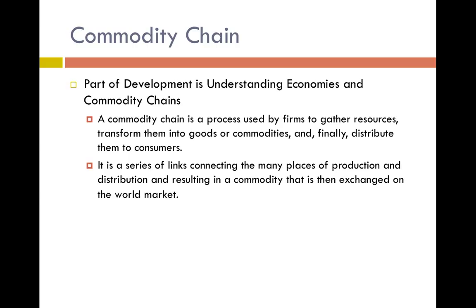A commodity chain goes into every aspect of production of a good. If we think about your iPad, think about how many different materials are involved — the glass, the different metals needed to make the memory and the internal components — all the way to when that piece of technology makes it to the Apple Store. This doesn't have to be for something as complicated as an iPad. Bananas have different commodity chains, clothing has different commodity chains. A good way to think about it is a connected path from which goods travel from producers to consumers.